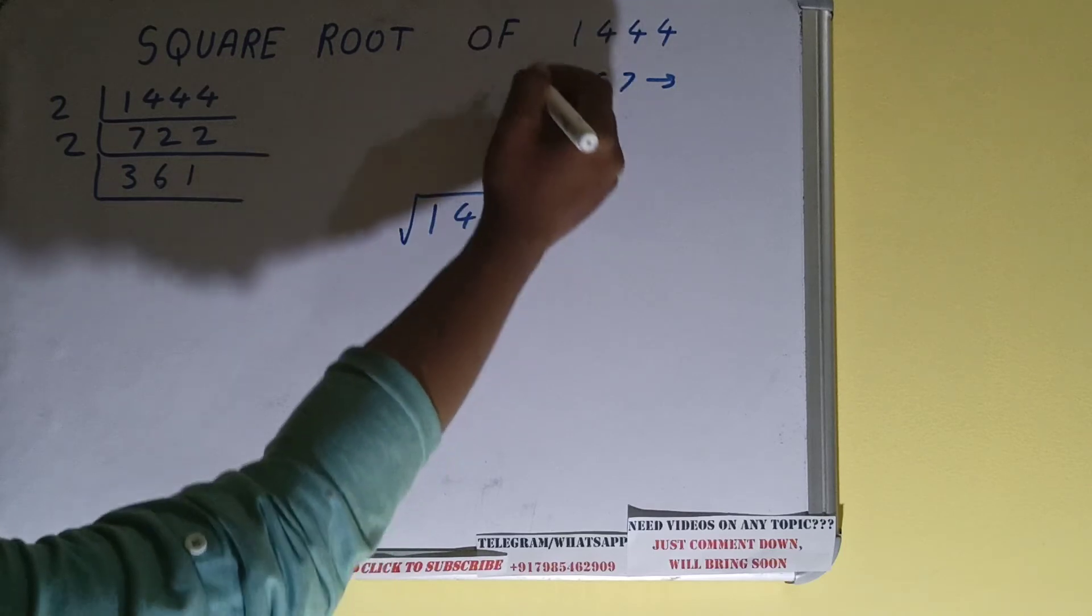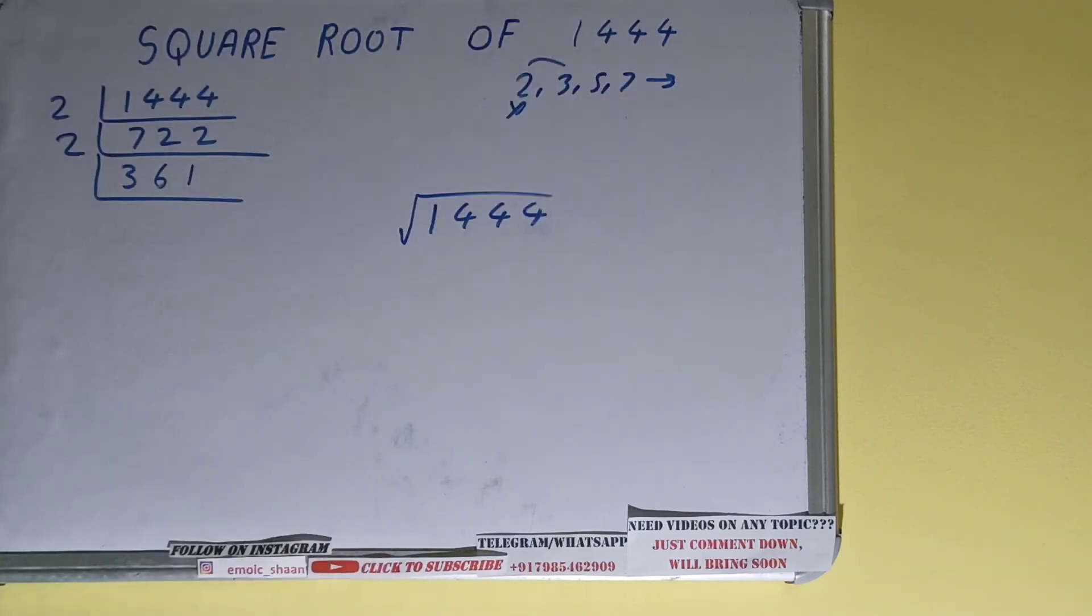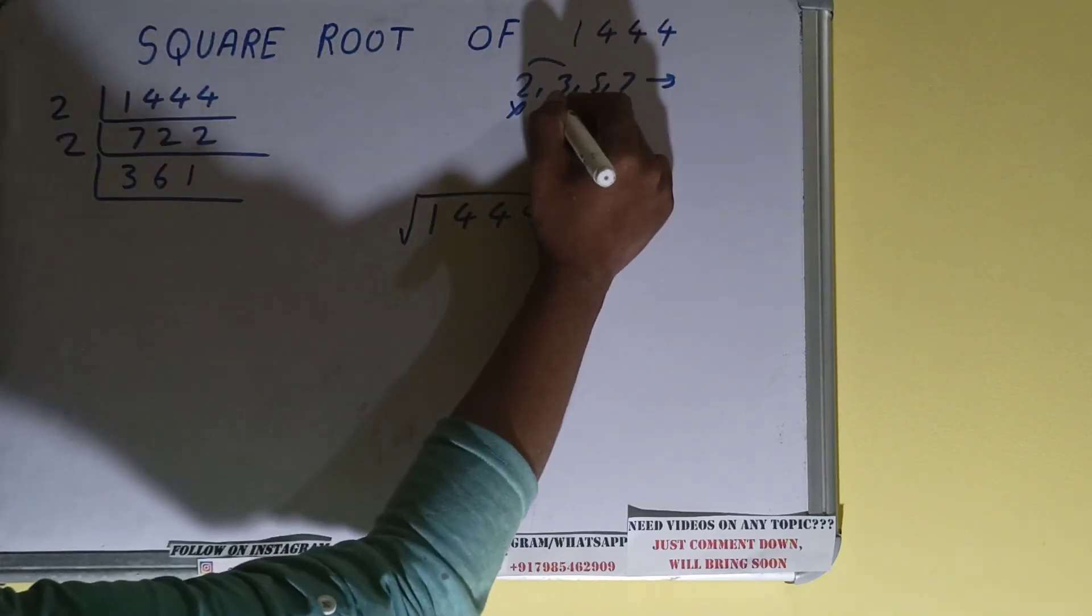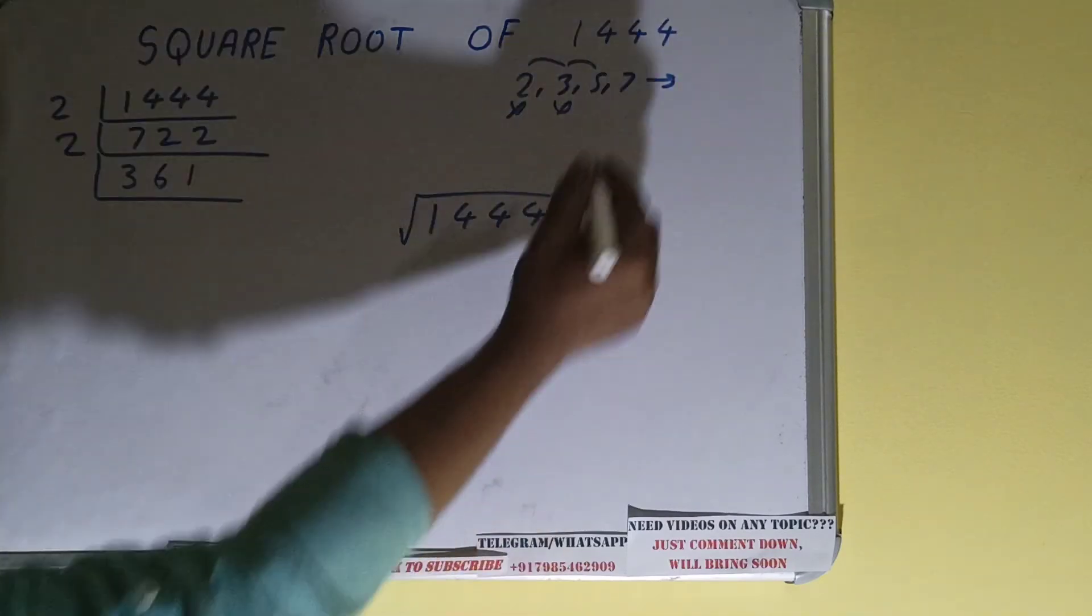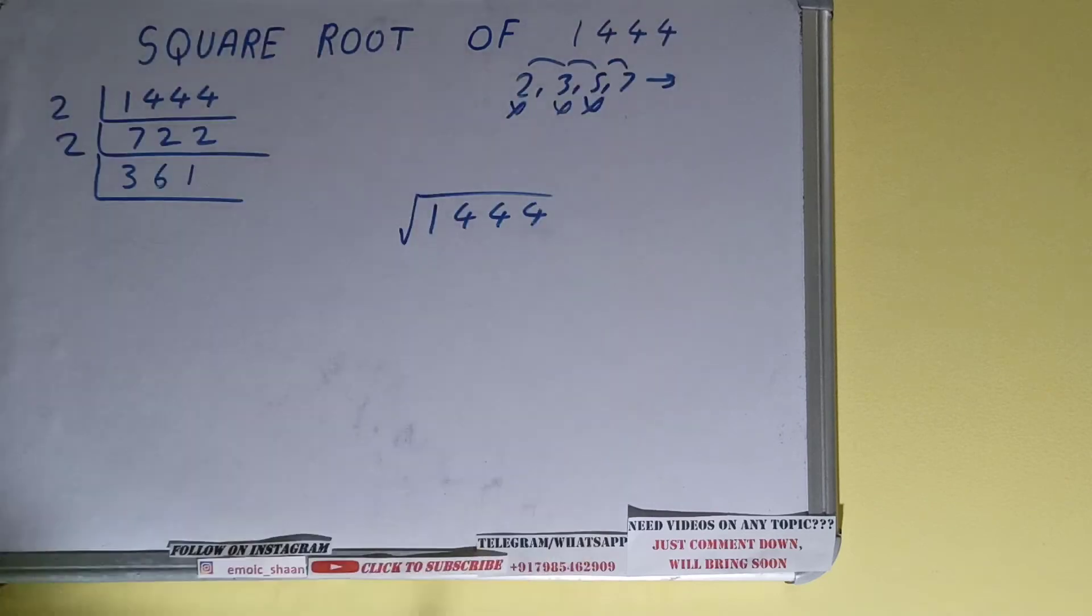Now it is not divisible by 2 because it is odd, so we'll check with the next lowest prime number, that is 3. Is it divisible by 3? Three 12s are 36, one left, not divisible. Is it divisible by 5? The last digit is neither 5 nor 0, so it is not divisible. Let's check with 7: 7 fives are 35, one one, not divisible.